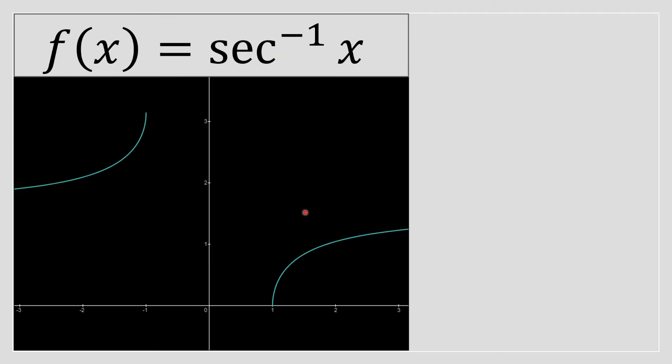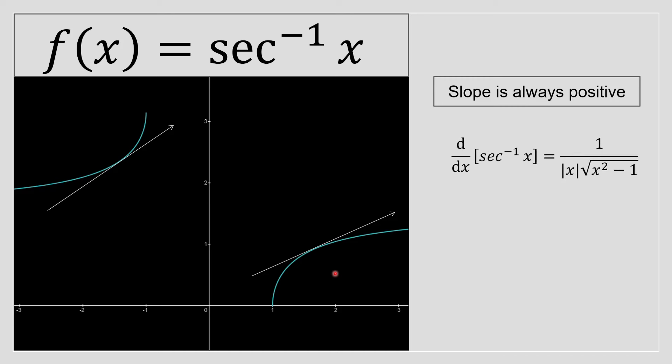This is the curve of arc secant of x. Now, if you take the slope at any point of this curve, you'll notice it's just going to have a positive slope, therefore positive derivative. This is the same on the right hand side too. As a result, the slope is always positive. Therefore, the derivative has to be always positive.